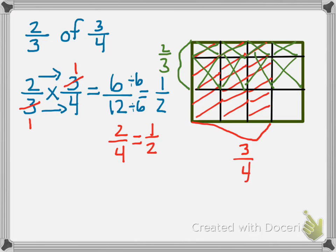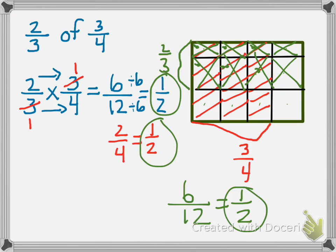So how many boxes are shaded twice? How many boxes have both a red and a green mark in it? Well, here's 1, 2, 3, 4, 5, 6. 6 out of how many all together? 1, 2, 3, 4, 5, 6, 7, 8, 9, 10, 11, 12. 6 out of 12, which is equal to 1 half. So no matter how I solve it, I get 1 half as an answer.